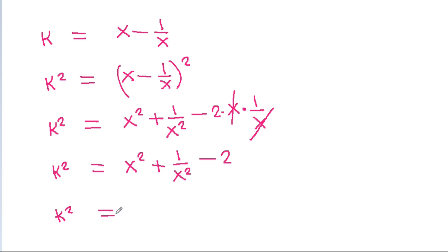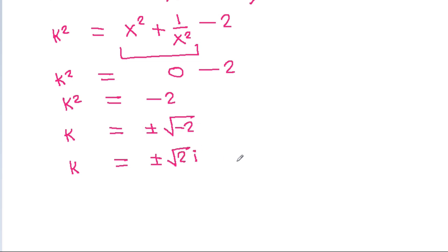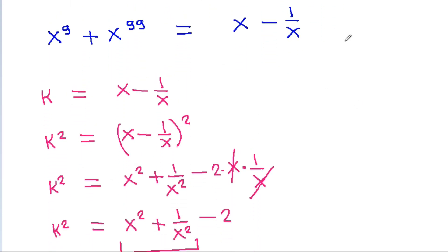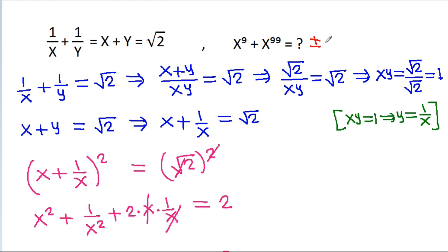So k squared is equal to minus 2. Therefore k will be equal to plus or minus square root of minus 2. And square root of minus 2 is square root of 2 times iota. So k equals plus or minus square root of 2 iota.